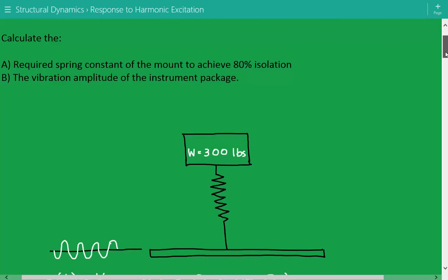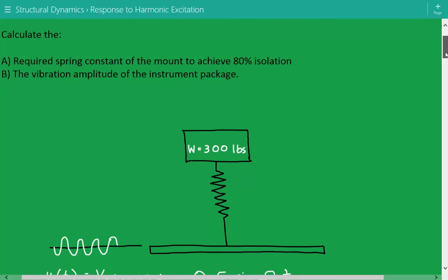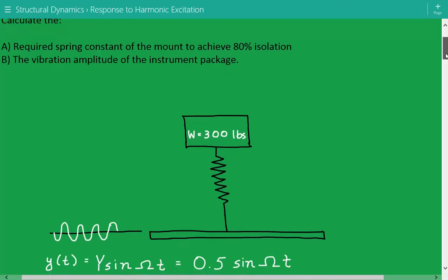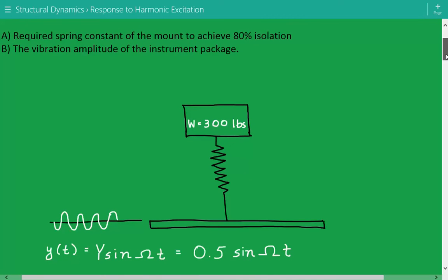We need to calculate the required spring constant of the mount to achieve 80% isolation, and we also need to calculate the vibration amplitude of the instrument package.